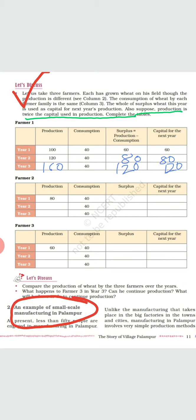Again, 80 into 2 is 160. So Year 3 production is 160. Consumption is 40, so surplus will be 160 minus 40 equals 120. The capital in hand is 120. Kids, in the same way you have to solve for Farmer 2 and Farmer 3, and then answer the questions based on these tables.